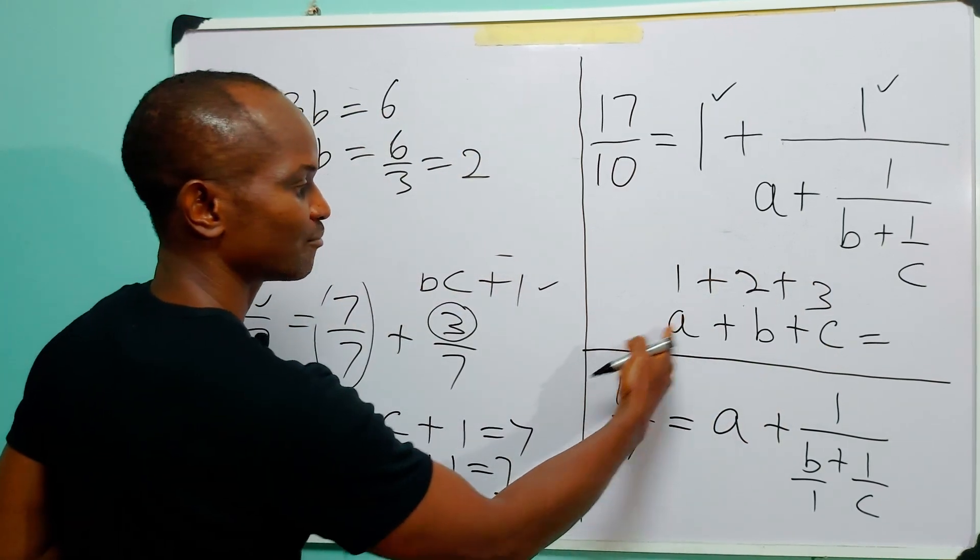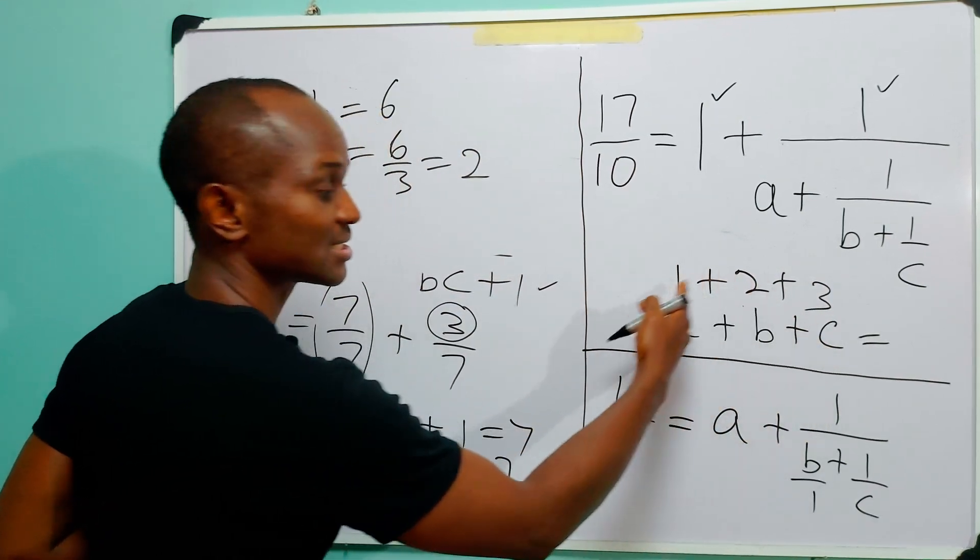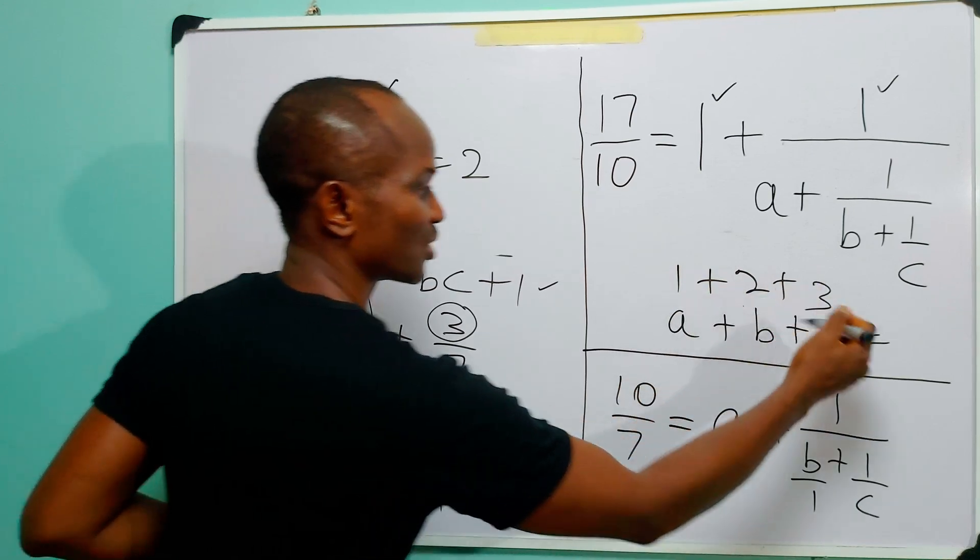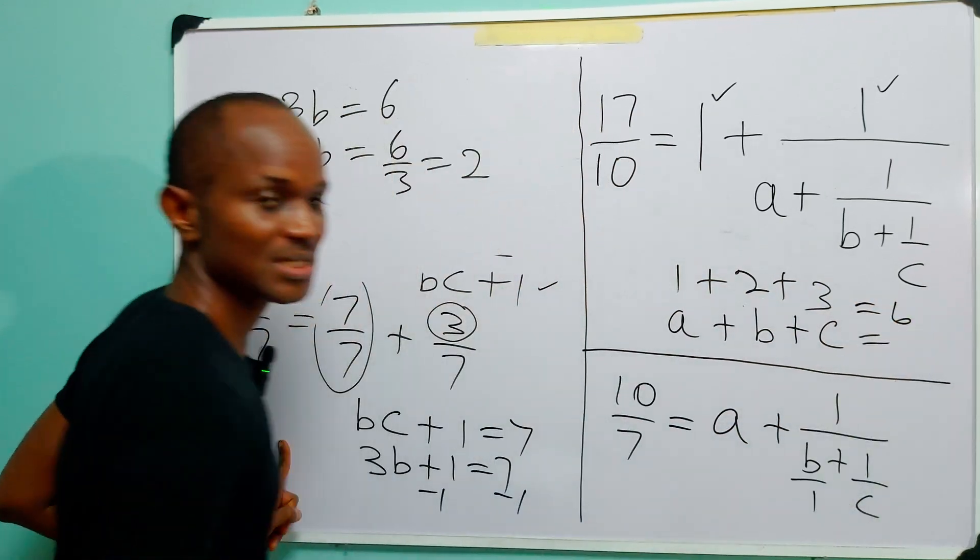...giving us that A plus B plus C is equal to 1 plus 2 plus 3, which is equal to 6.